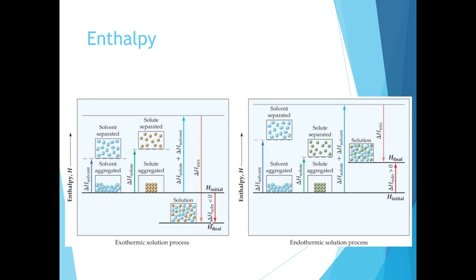The formation of some solutions can also be endothermic. In an endothermic solution process diagram, we still add energy to break solvent and solute interactions. When we mix them together, some energy is released, but not enough to compensate for all the energy that was inputted to break the solvent-solvent and solute-solute interactions. As a result, the final enthalpy is higher than the initial, giving us a positive enthalpy of solution for an endothermic process.